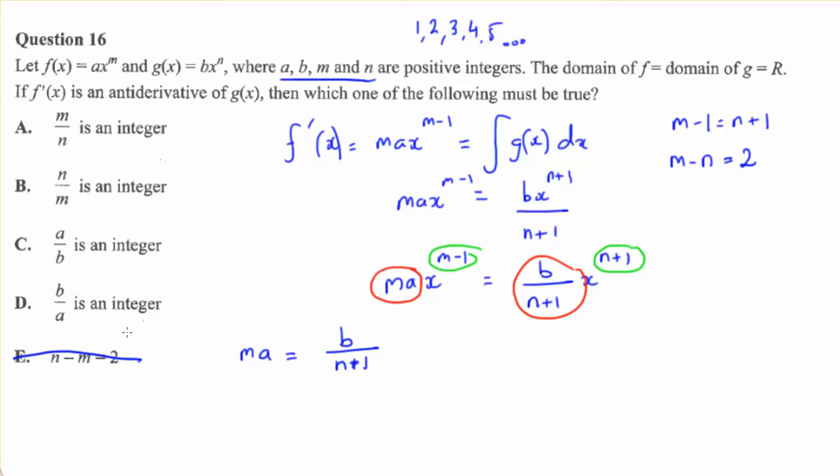b on n plus 1 has to be an integer or a whole number. But that's not there. So, you're going to have to do some rearranging here. We're going to have to do some algebra. Let's put n plus 1 over here.